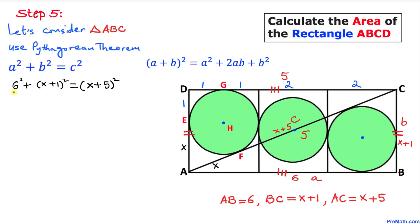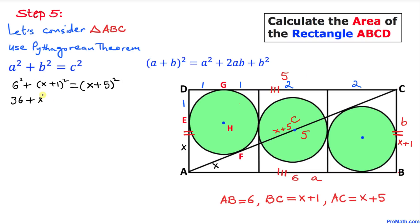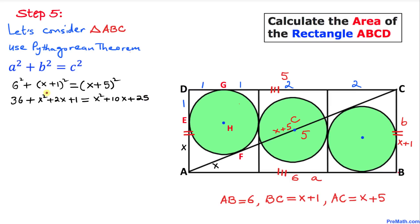Let's go ahead and simplify: 6 squared is 36. We expand the binomials using the formula (a+b)² = a² + 2ab + b². So the left side becomes 36 + x² + 2x + 1, and the right side becomes x² + 10x + 25. We can see that x² cancels on both sides.